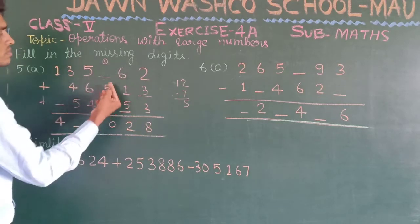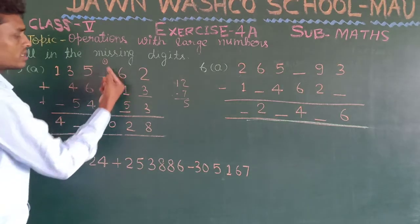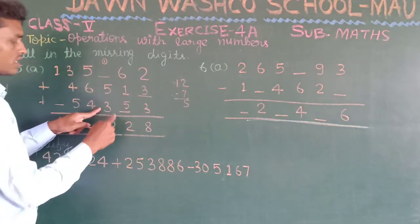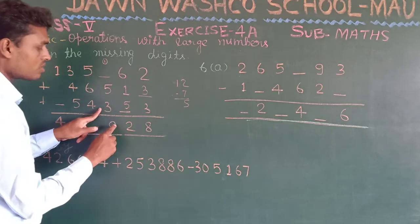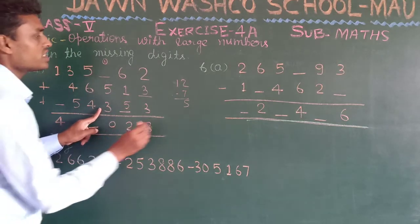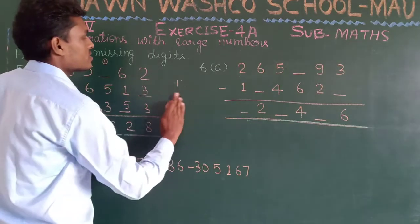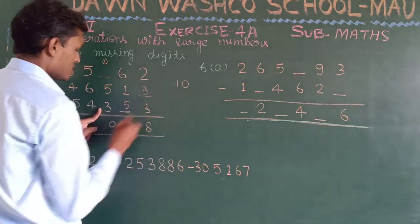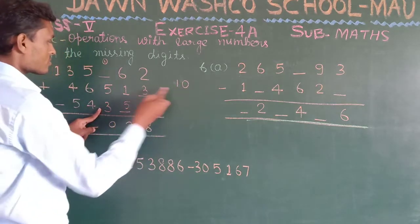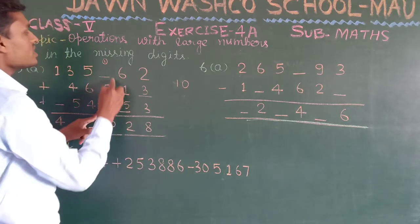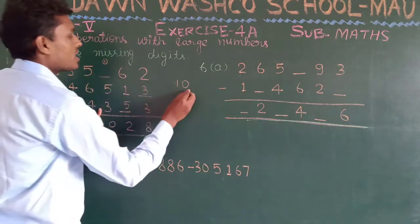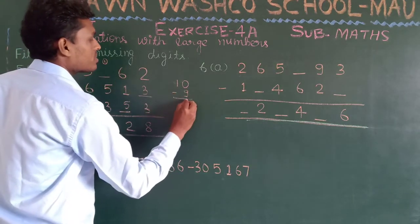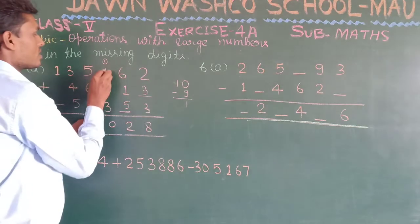Next: 5, 6, and 1 — that is 6, 6, and 3 is 9. Here we are having 0 as the result digit, so we take it as 10. Now 5, 3, 8 and 1 is 9. Ten minus 9 gives 1, so we write 1 here.